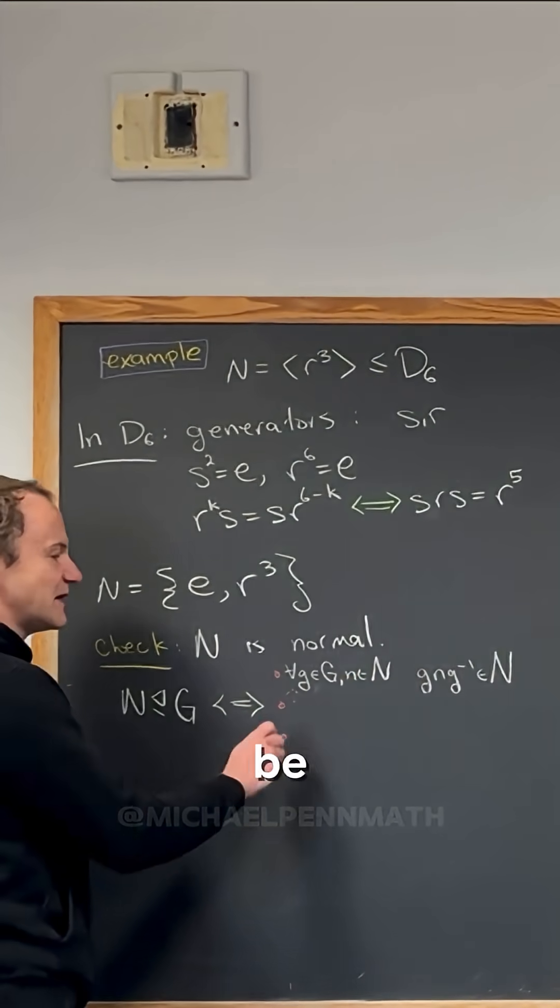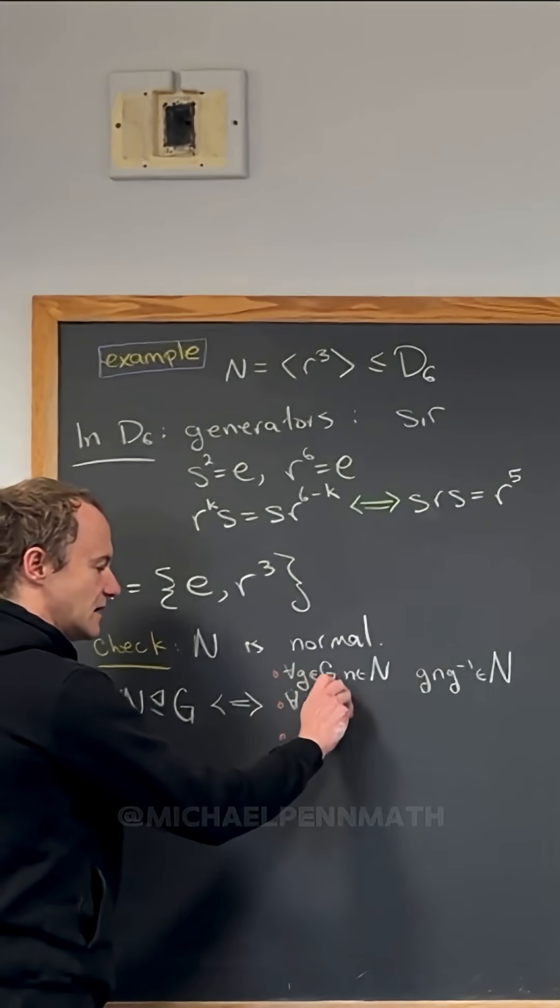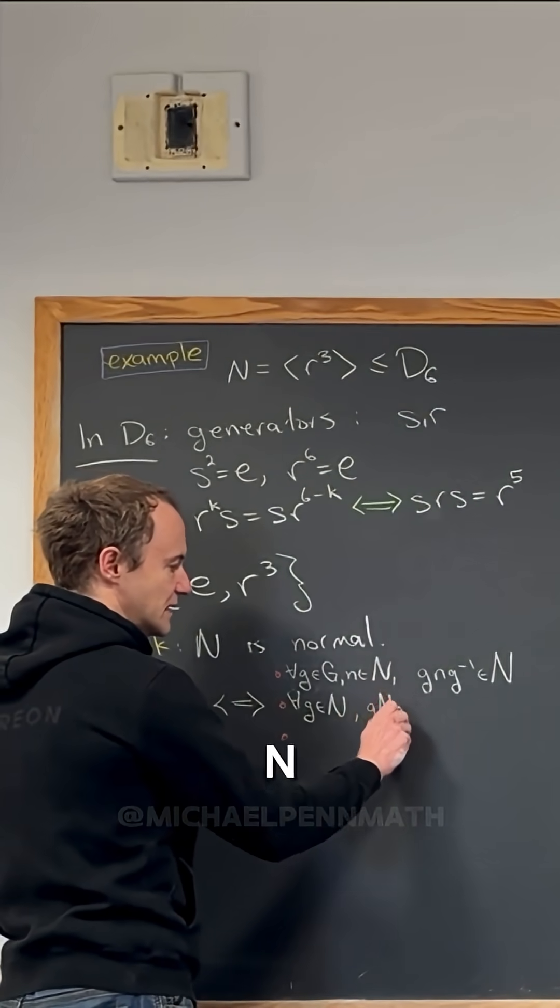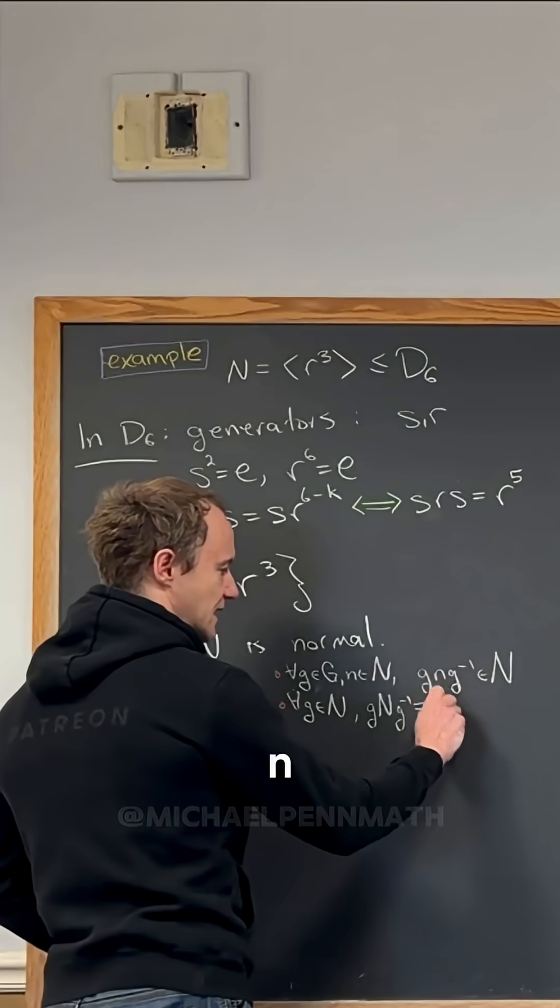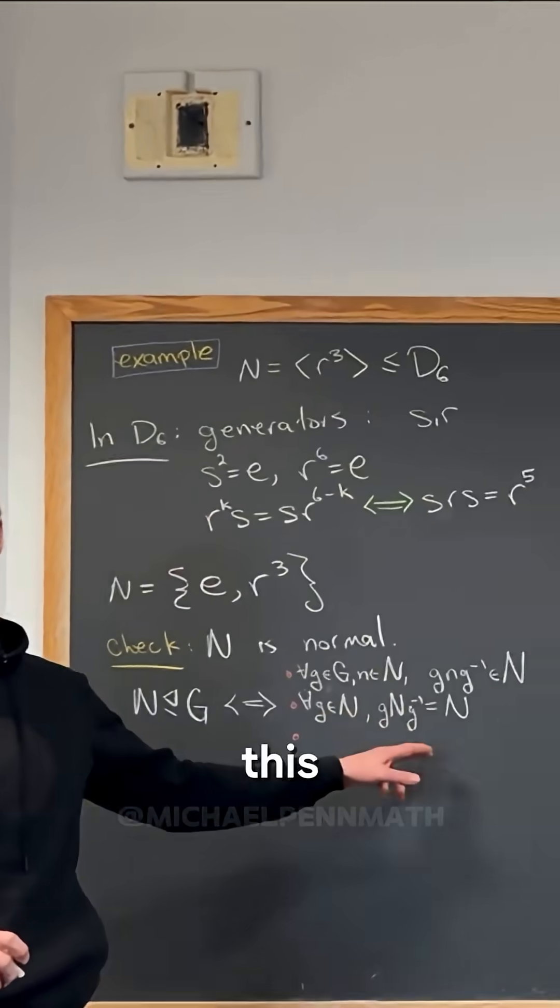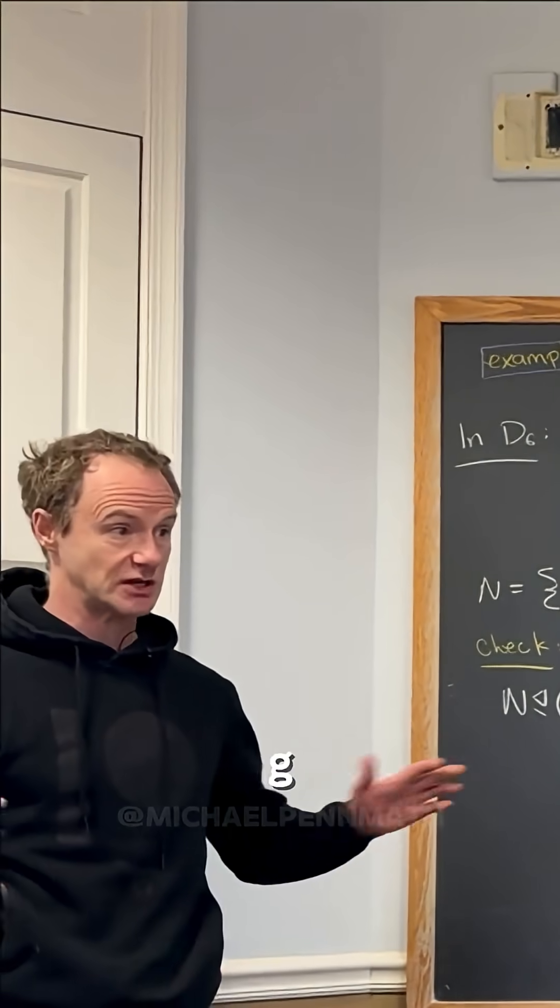No. But that's going to be the next one that I write down. For all g in G, g capital N g^(-1) equals N. Now, like a couple of days ago, we talked about this conjugate subgroup, right? So the conjugate subgroup is just equal to the subgroup itself for all g.